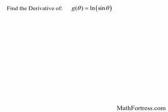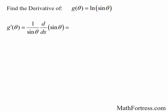Find the derivative of g of theta equals the natural log of sine of theta. We also have a composition of functions, where the outer function is the natural log and the inner function is sine of theta. Taking the derivative of the natural logarithm and evaluating it at sine of theta, then multiplying by the derivative of sine of theta, we get cosine of theta over sine of theta, which can be rewritten as cotangent of theta.